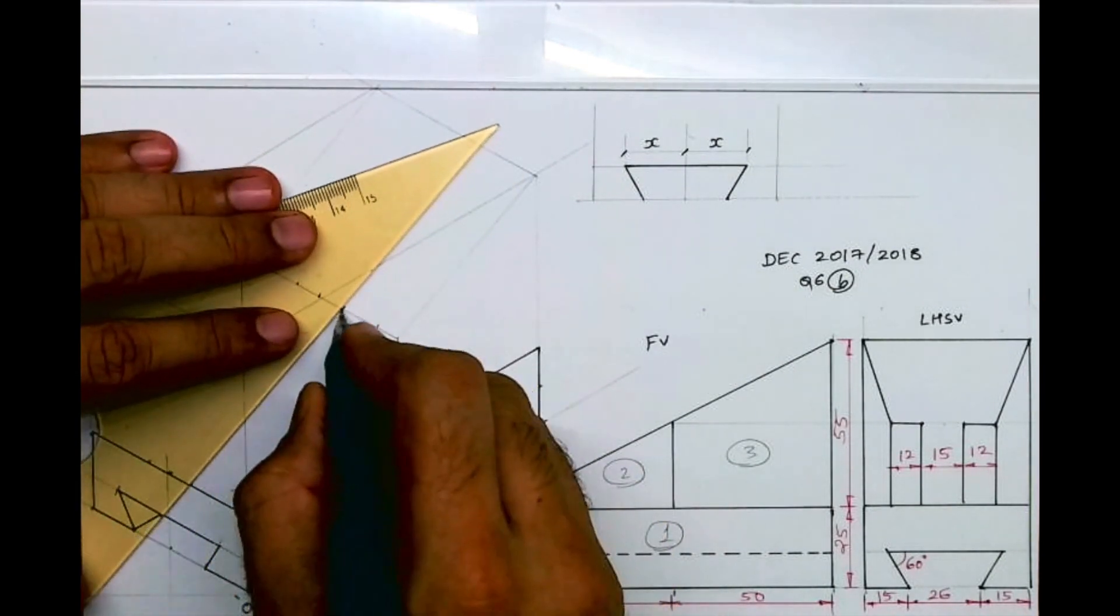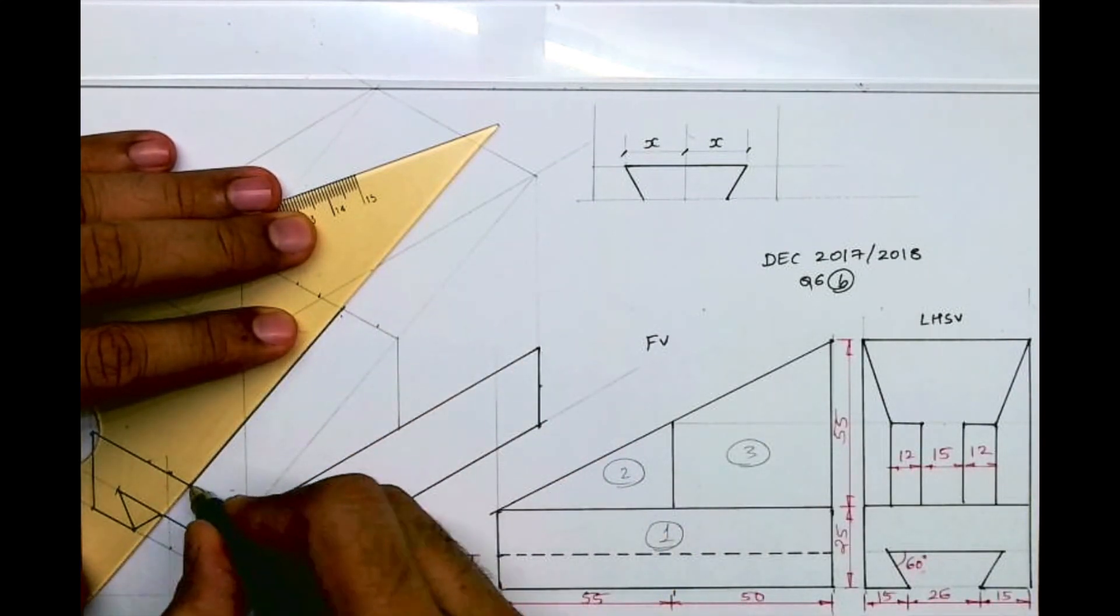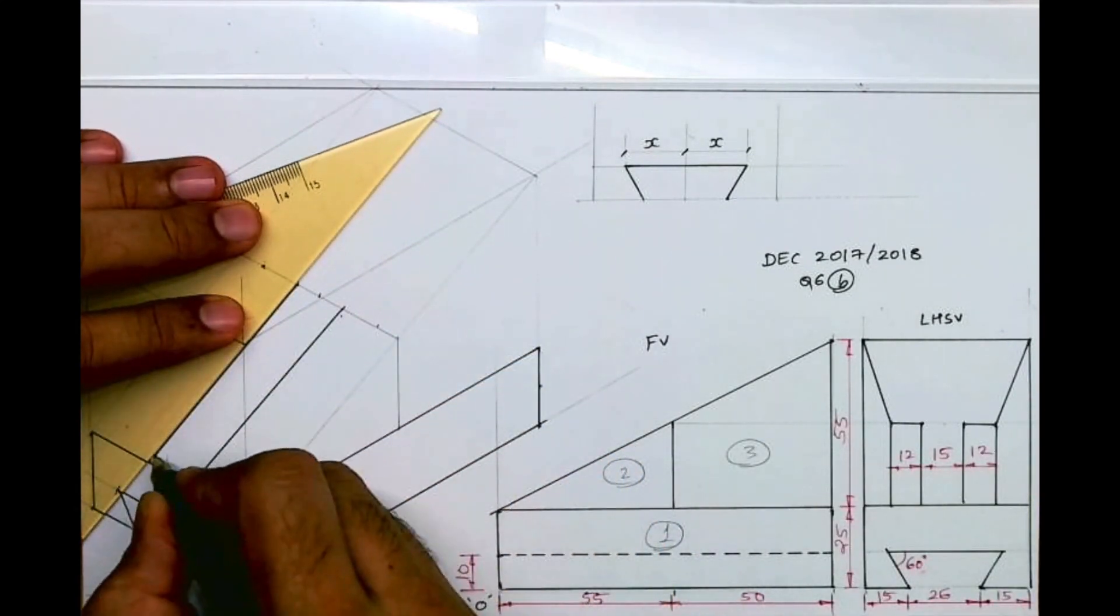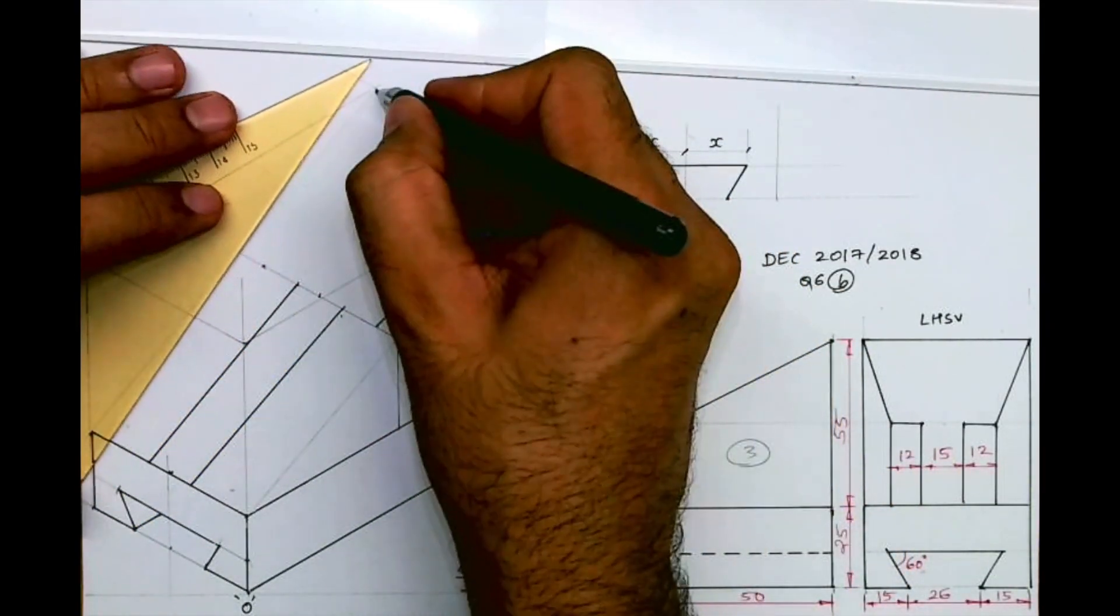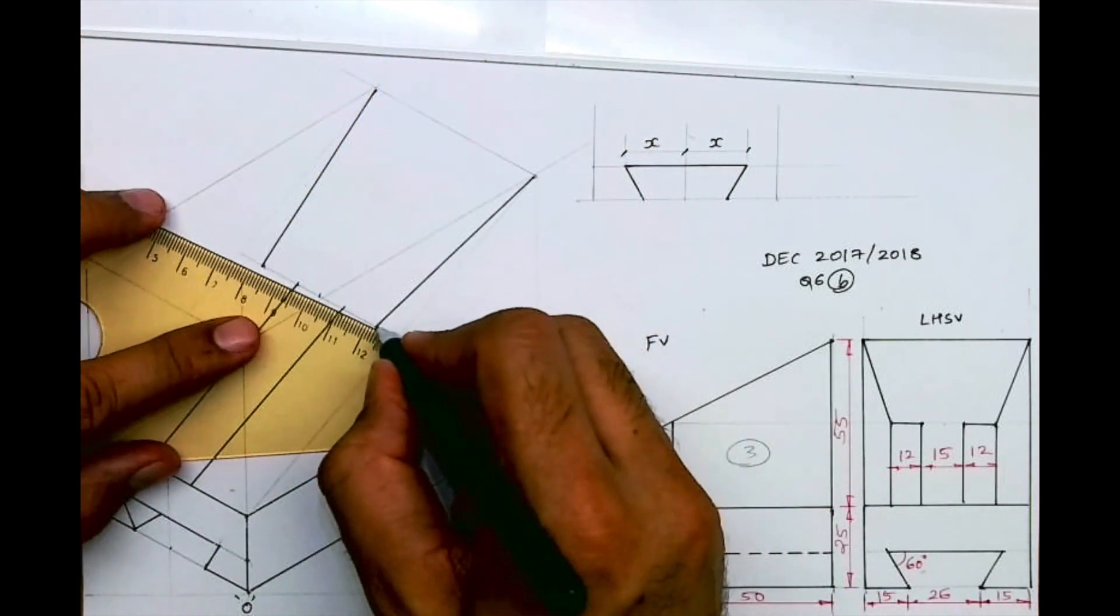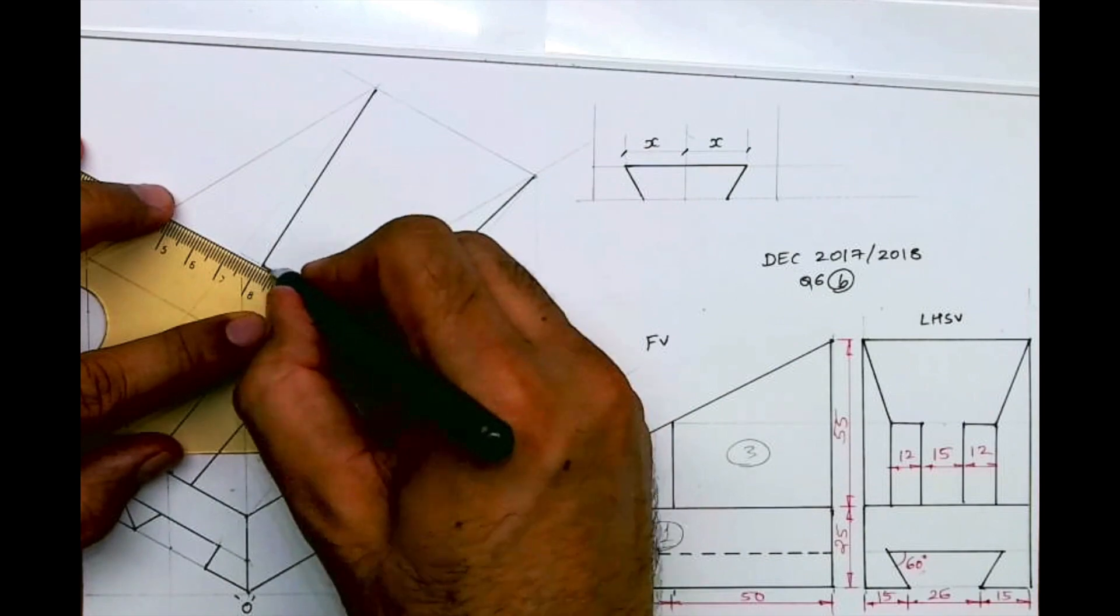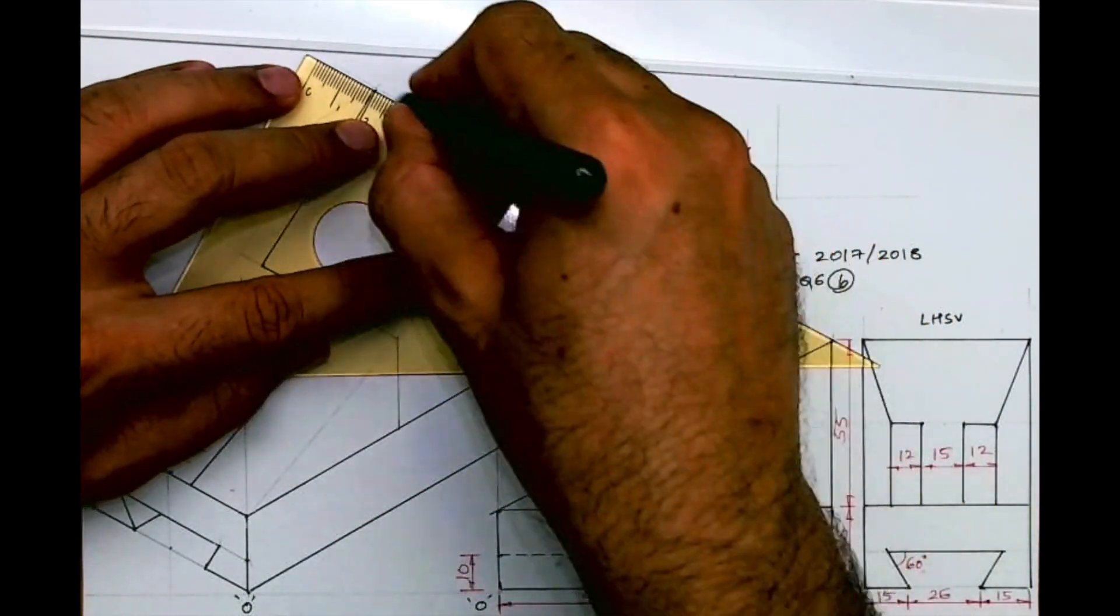Then you join. See this, this part and this part. You join this slope and this way. See, this you can see in the side view. This entire slope, see this. So we are done with this part.